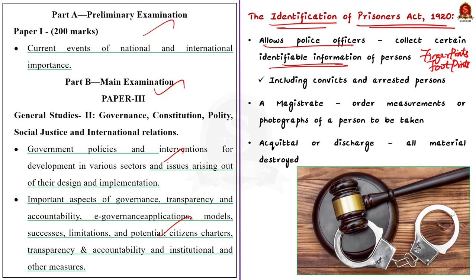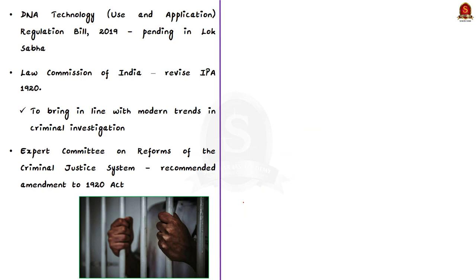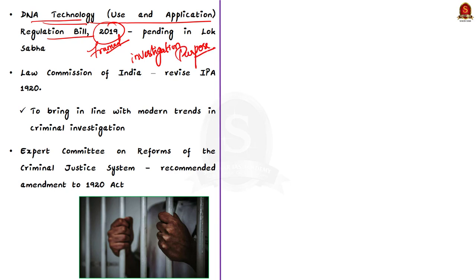In case of acquittal or discharge of the person, all material must be destroyed. As time passed, advances in technology allowed other measurements to be used for criminal investigation. To make use of this, the DNA Technology Use and Application Regulation Bill 2019 was framed, providing a framework for using DNA technology for investigation. Unfortunately, this bill is pending in Lok Sabha citing reasons like violation of right to privacy. In 1980, the Law Commission of India, while examining the 1920 Act, noted the need to revise it to bring it in line with modern trends in criminal investigation.